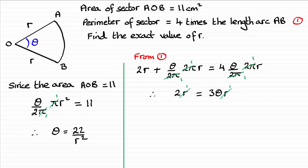Now all I need to do now is just substitute the value of theta that we found down here. So I'm just going to say sub for theta. Okay, and if we do that, then we've got the 2 equals 3 times theta. That's 3 times the 22 then over R².